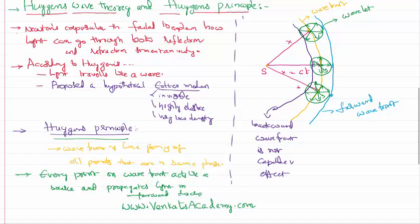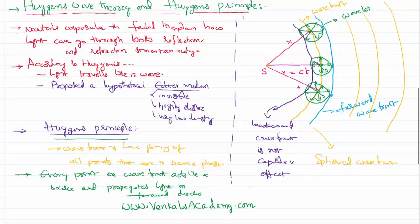The wavefront being generated is spherical in shape, so it is called a spherical wavefront. As we go farther and farther away, the sphere becomes larger and larger, and the wavefront appears like a straight line — then it is called a plane wavefront. From a point source, a nearby wavefront is spherical; farther away it becomes a plane wavefront. If the source is cylindrical in shape, the wavefront will also be cylindrical — called a cylindrical wavefront.